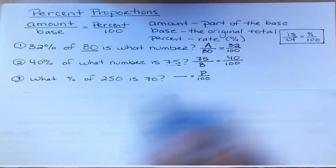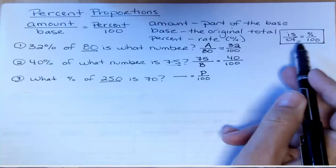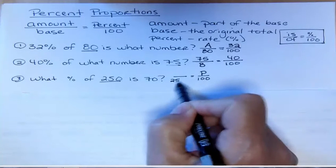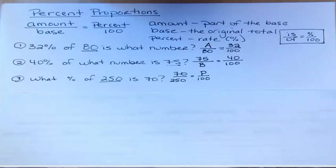Then I'm going to say which number is the base and which number is the amount. Well, 'of 250'—'of' is my base, so 250. And 'is' is my amount, so that's 70. So I've set that one up and I'm ready to solve it.